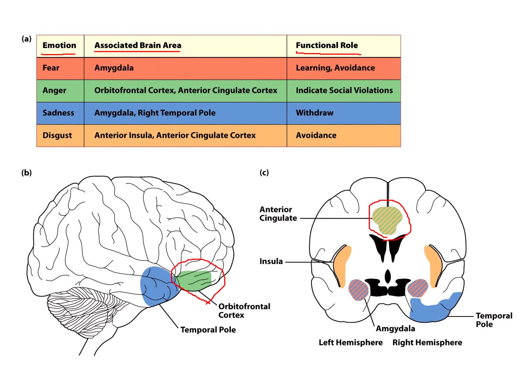For disgust, the associated brain areas are the anterior insula and anterior cingulate cortex, with avoidance as the functional role. Surprise and happiness are not well understood yet in terms of brain areas — these are areas for future emotional research. That's all for today. Next time we'll move away from emotions and talk about language.